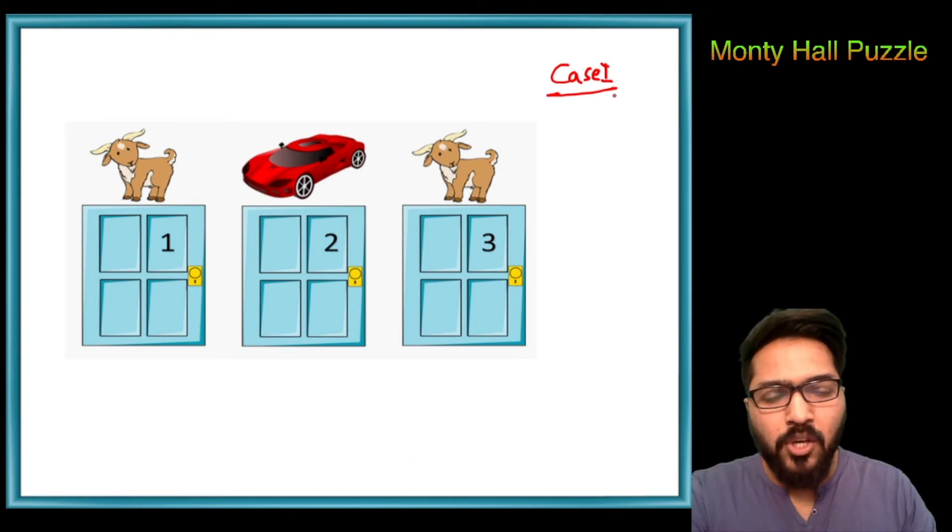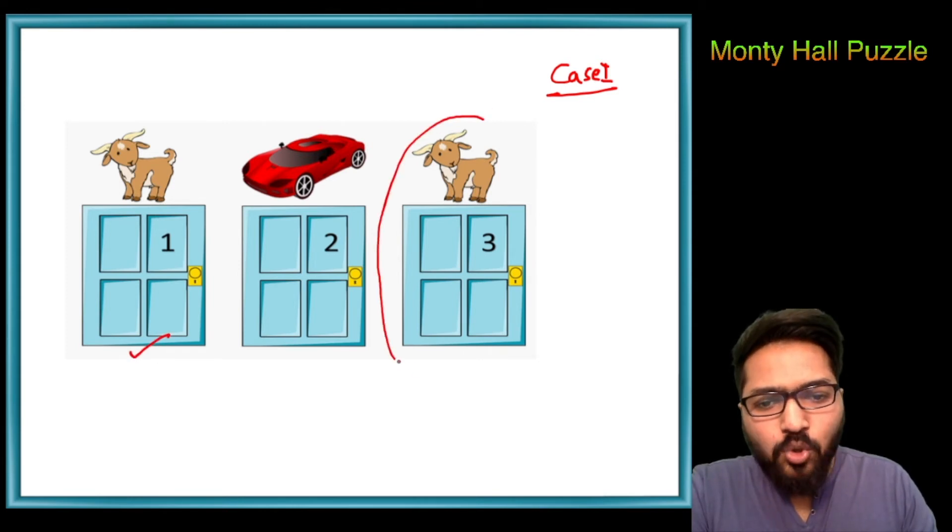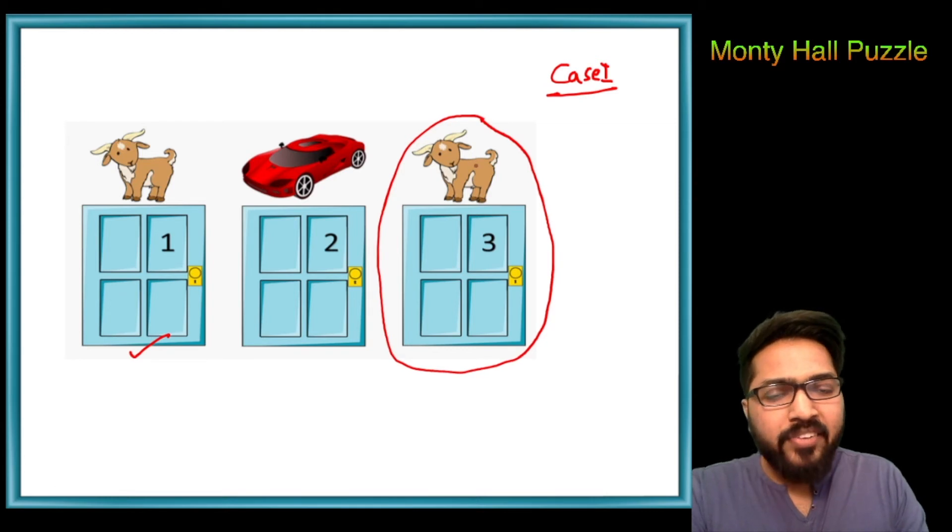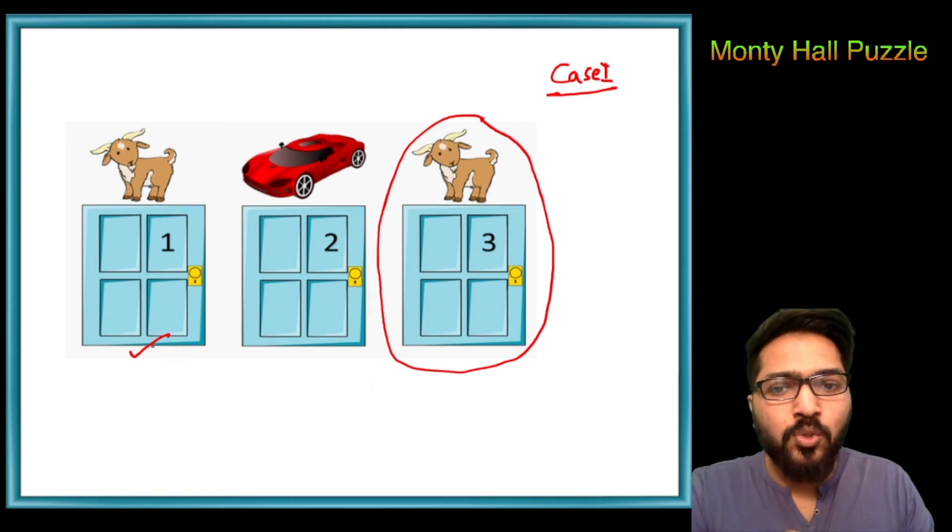In case one, if he chooses door one, now obviously the game show host is going to open door three because he will ask the contestant whether he wants to change his decision from door one to door two. So if the contestant wants to win the car, he should change his decision.